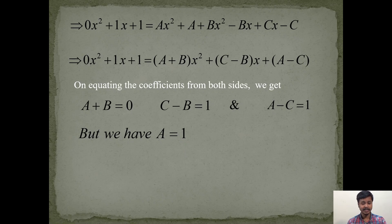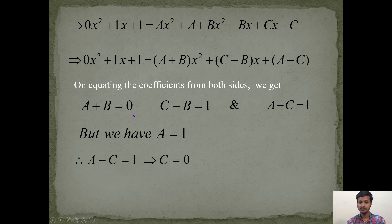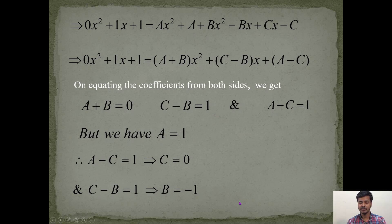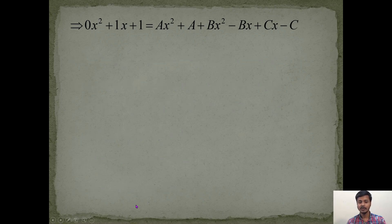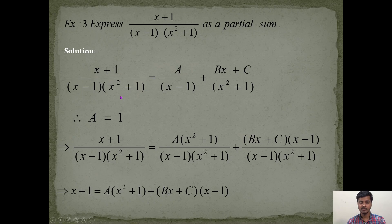Since A = 1 was already found by cover-up (saving time over solving simultaneous equations fully), substituting A = 1 into A − C = 1 gives C = 0. Then substituting C = 0 into C − B = 1 gives B = −1. The final answer is: (x + 1)/[(x − 1)(x² + 1)] = 1/(x − 1) + (−x + 0)/(x² + 1).